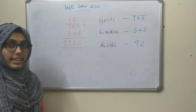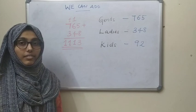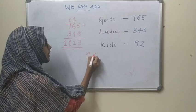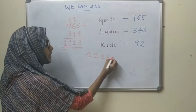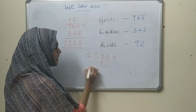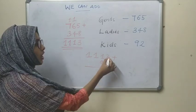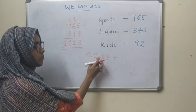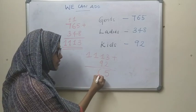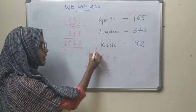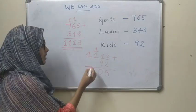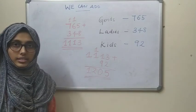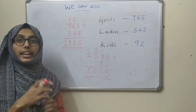Now we want to add the tickets given to kids also — then only we get the total. So with 1113 we add 92. 3 plus 2 is 5. 9 plus 1 is 10 — write 0 and carry 1. 1 plus 1 is 2, write 1 here. So 1205 tickets were given in total.